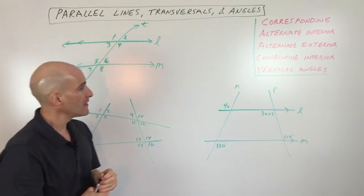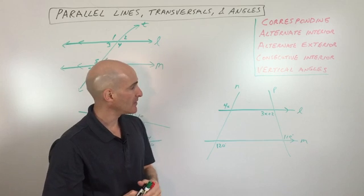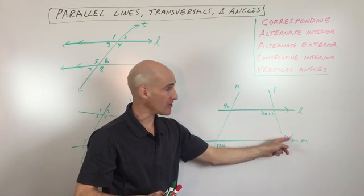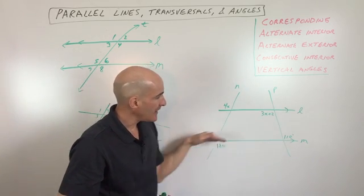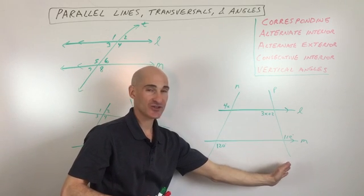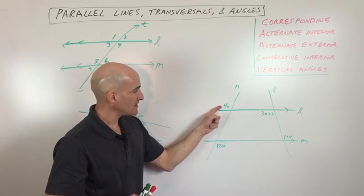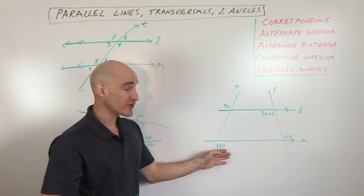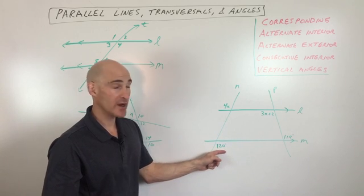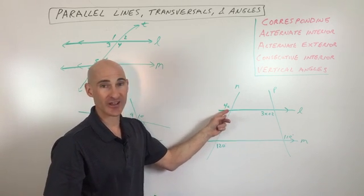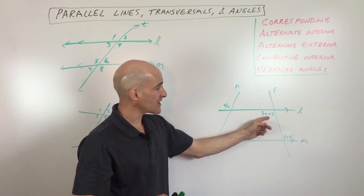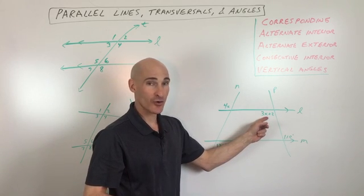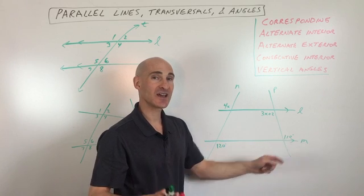In this example we find X. When you see small arrows on lines — not at the ends but somewhere along the line — that indicates the lines are parallel. So lines L and M are parallel, cut by transversal P. The connection between angle 4X and angle 120 is that they're alternate exterior angles, which are congruent. So set 4X equal to 120 and solve: X equals 30. In the next problem, the two angles are alternate interior angles — also congruent — so set 3X plus 2 equal to 110 and solve for X.